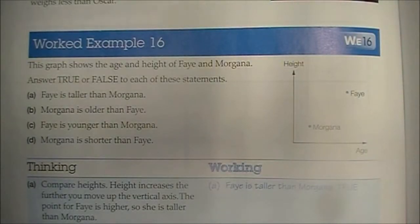Chapter 5.9 Interpreting Graphs, page 306. Worked Example 16. The graph shows the age and height of Faye and Morgana. Answer true or false to each of these statements.